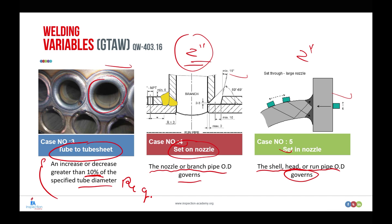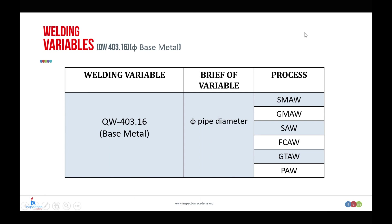This pipe diameter variable applies not only to the GTAW process but also to shielded metal arc welding, gas metal arc welding, submerged arc welding, flux-cored arc welding, plasma arc welding, and gas tungsten arc welding. This session summarized all the cases for pipe diameter as a variable. In our next session, we will discuss paragraph QW-403.18 for the P-number as a variable. See you soon!